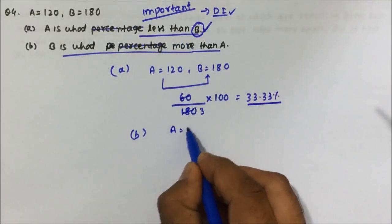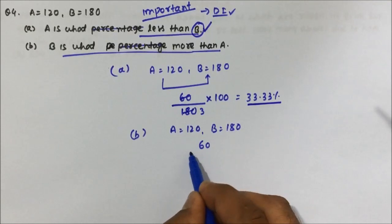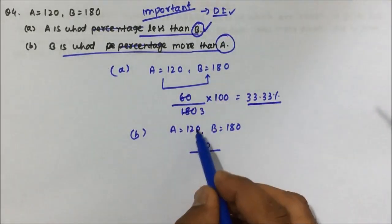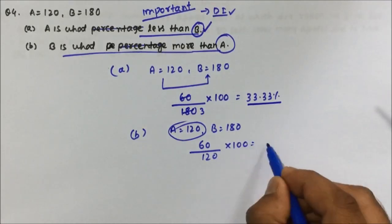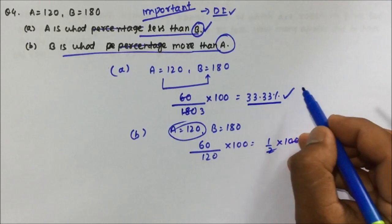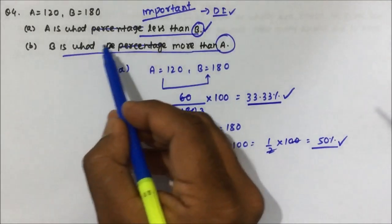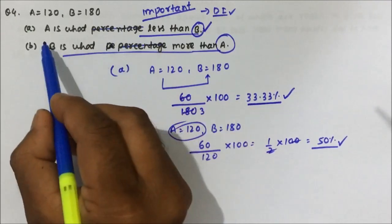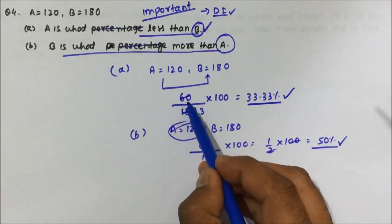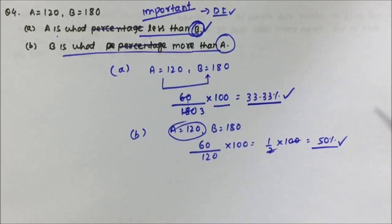Now, B is what percentage more than A? Forget the percentage — B is 60 more than A. B is being compared with A, so A goes down: (60 / 120) × 100 = 50%. So B is 50 percent more than A. The trick is simple: first find the difference, then divide by the base (whoever is being compared with), and multiply by 100. I hope you understood the concept and the tricks. Thanks a lot for watching.